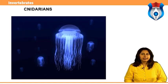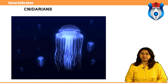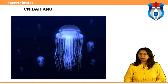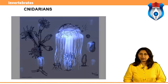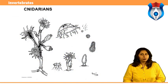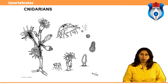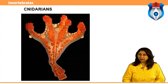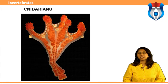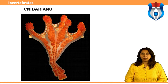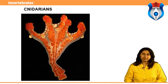Four classes make up the phylum Cnidaria: Anthozoa, which includes sea anemones and coral; Cubozoa, which includes box jellies; Hydrozoa; and Scyphozoa, which includes jellyfish.